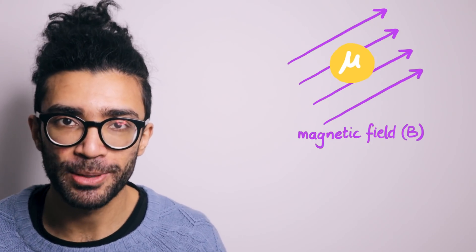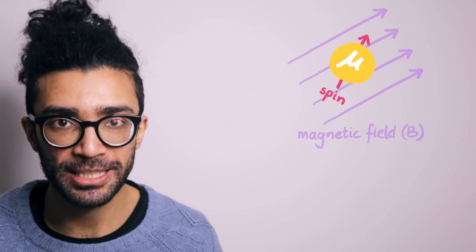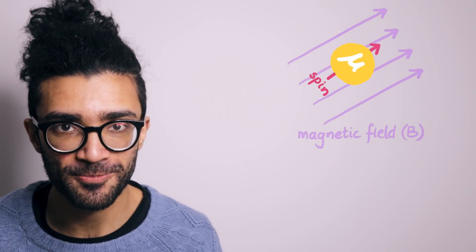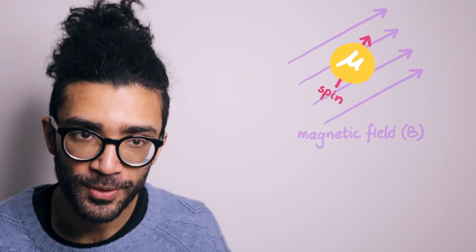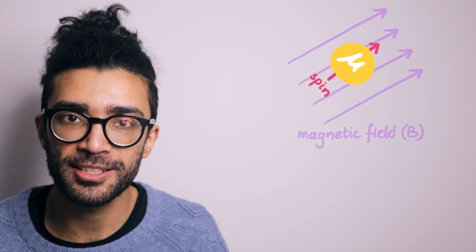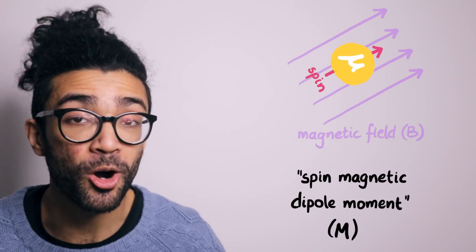Now, when we take a muon and we place it in a magnetic field, the spin of the muon causes it to interact with the magnetic field in some interesting ways. By the way, if you're not familiar with spin, then please do check out this video I made a little while ago. But this interaction between the spin of our muon and the magnetic field allows us to define a quantity known as the spin magnetic dipole moment of the muon.